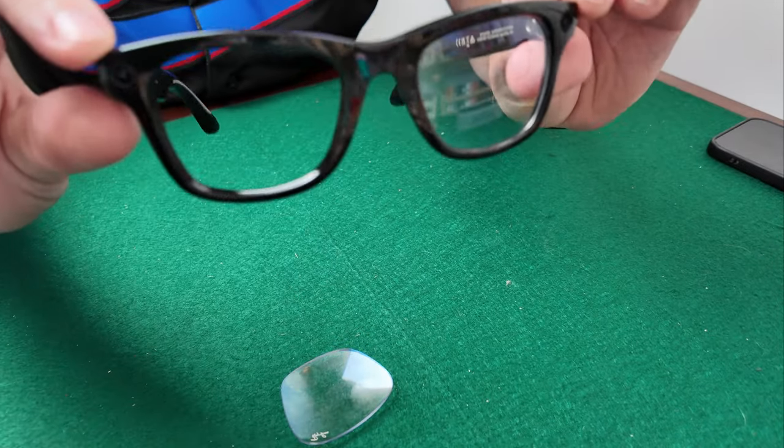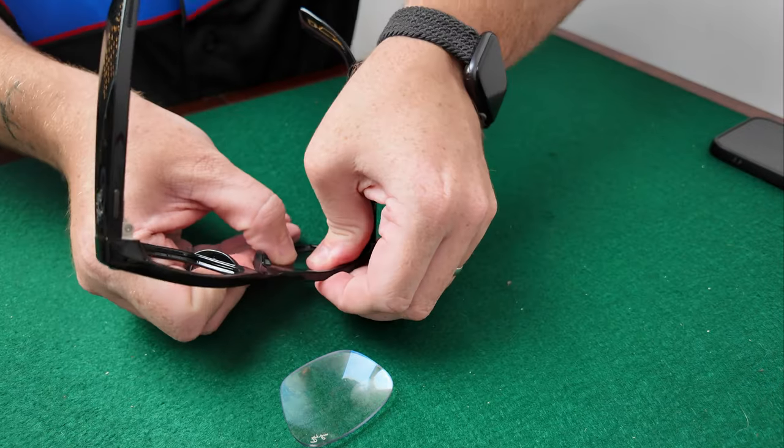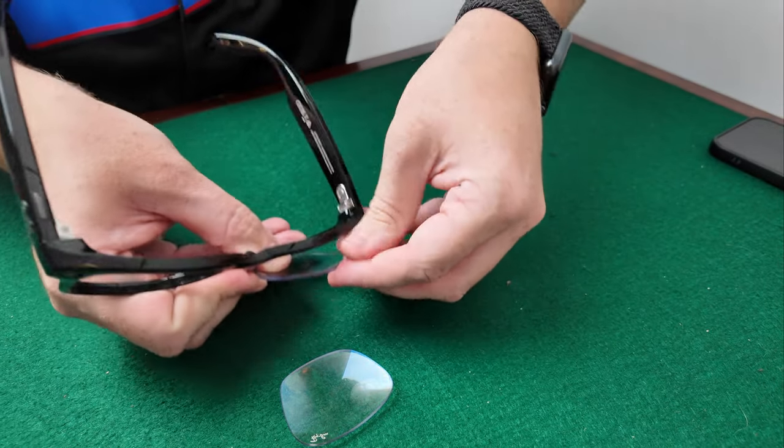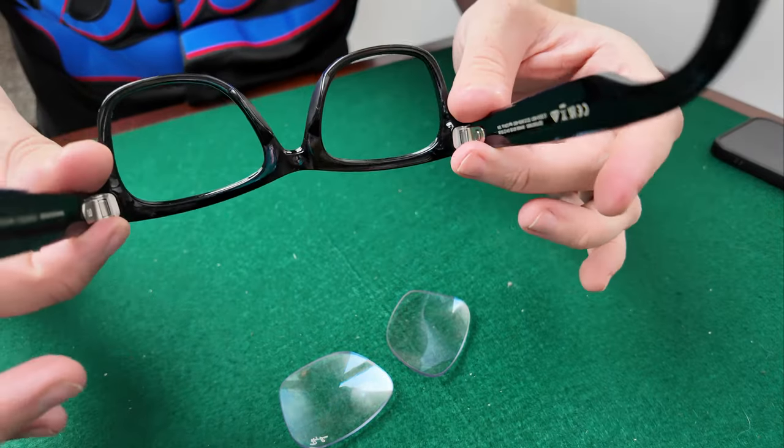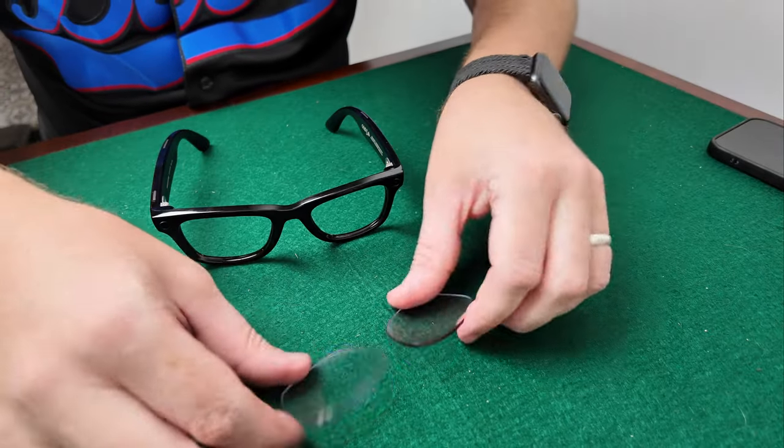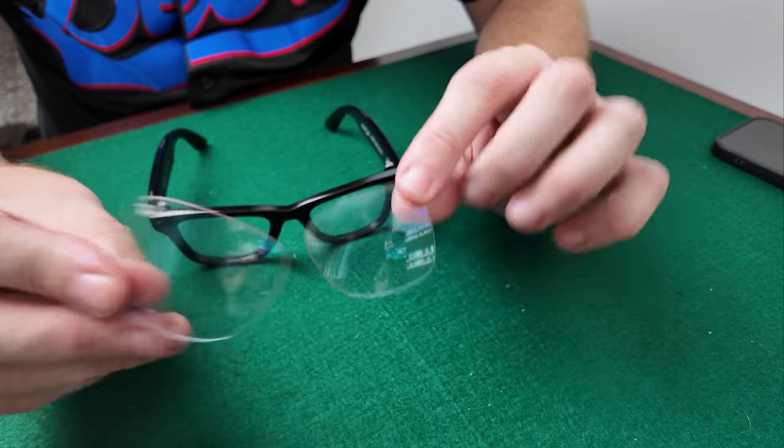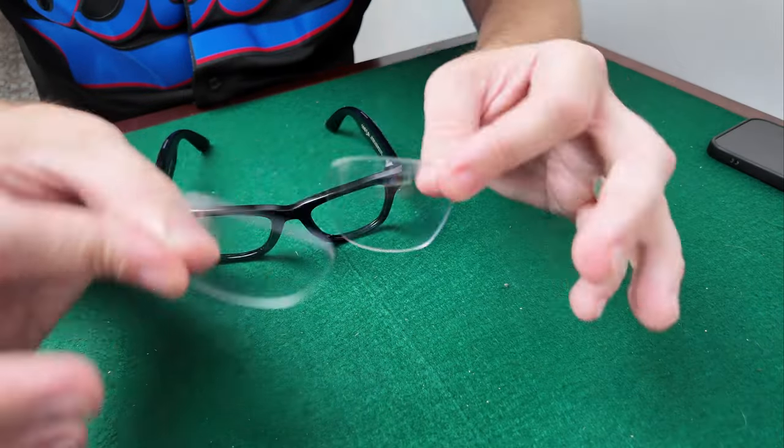Then just do the same with the next one. Give it a push, and it comes out just like that. Now you're left with the glasses frames with no lenses, and you have your lenses here, so you can keep them if you want to replace them later.